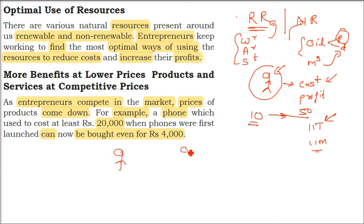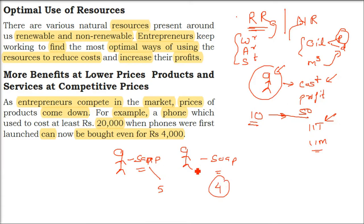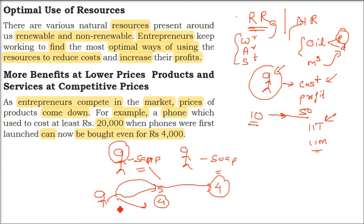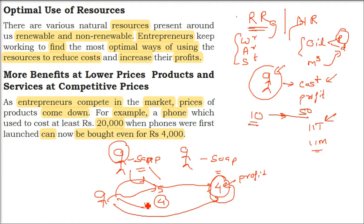Now, more benefits at lower prices — products and services at a competitive price. For example, two entrepreneurs are selling the same kind of soap. One is selling it for 5 rupees, the other for 4 rupees. You will go to the 4-rupee one. So the first one has to reduce the price to 4 as well. What the second entrepreneur has done is forced the market to give products at a reduced price. This is how the customer and society are benefited.